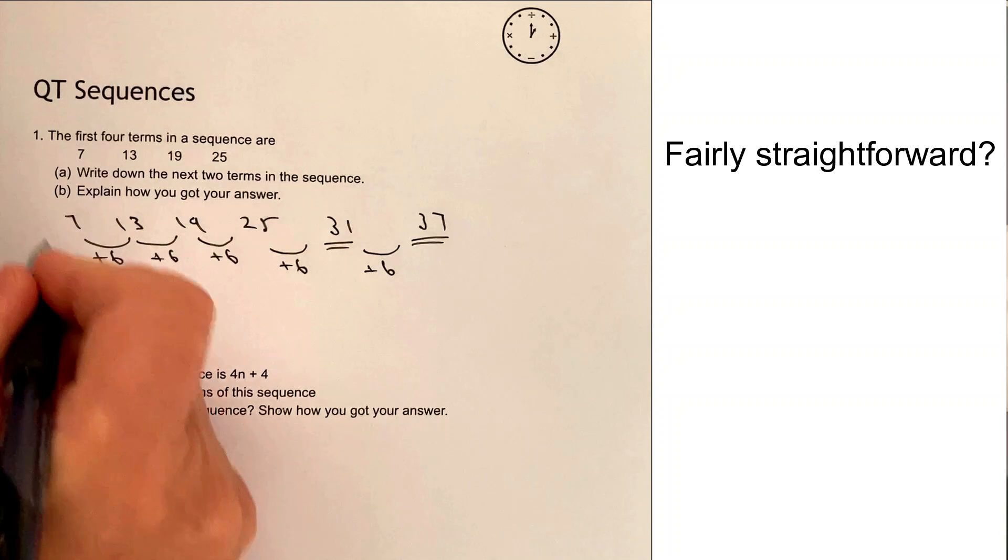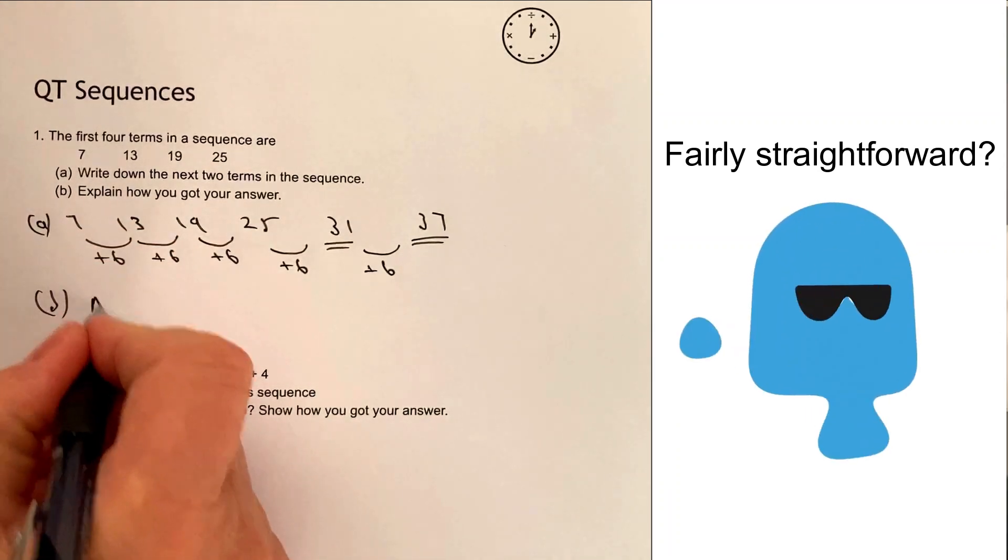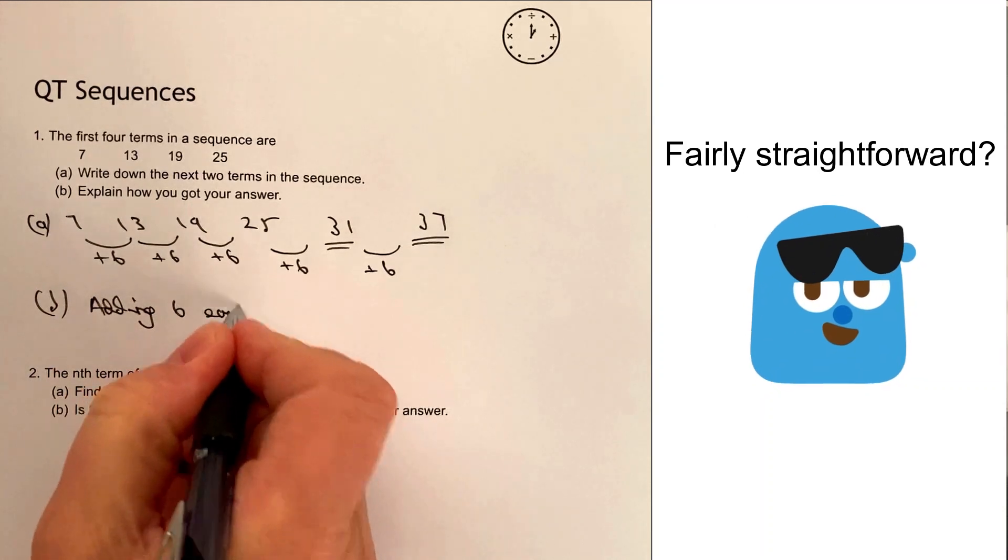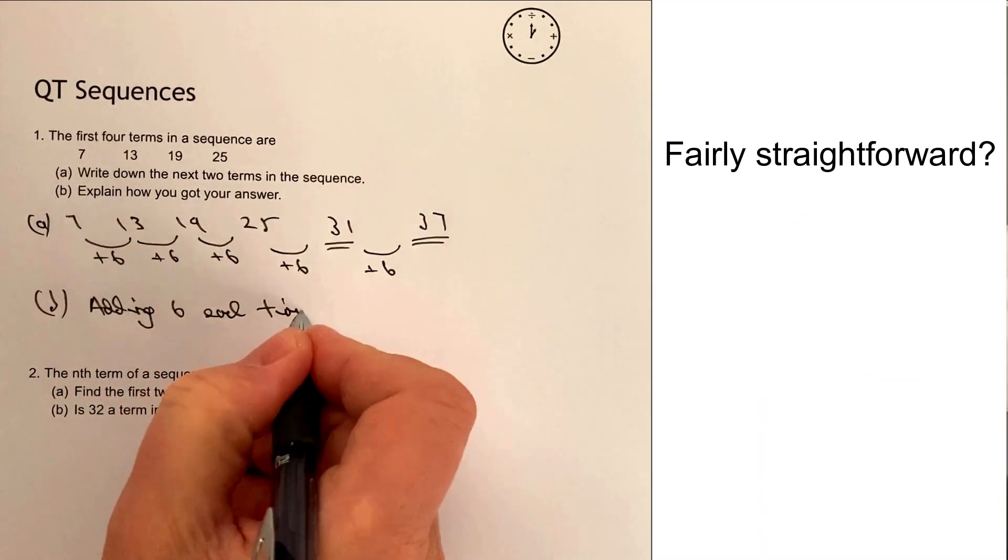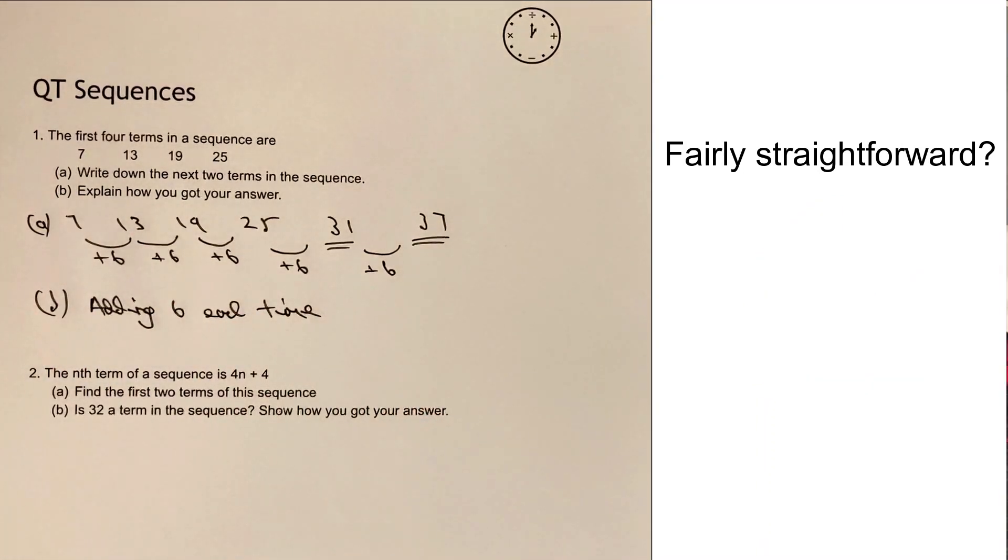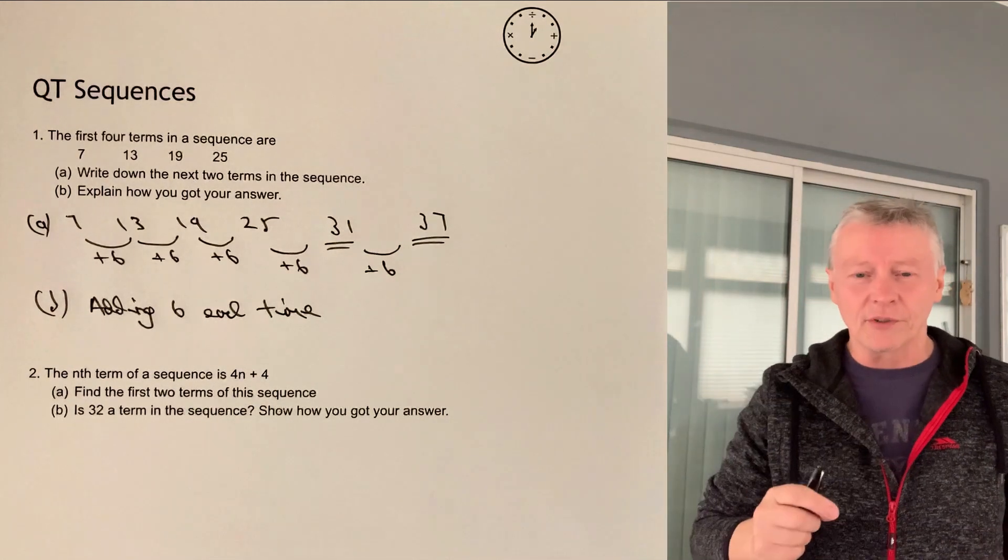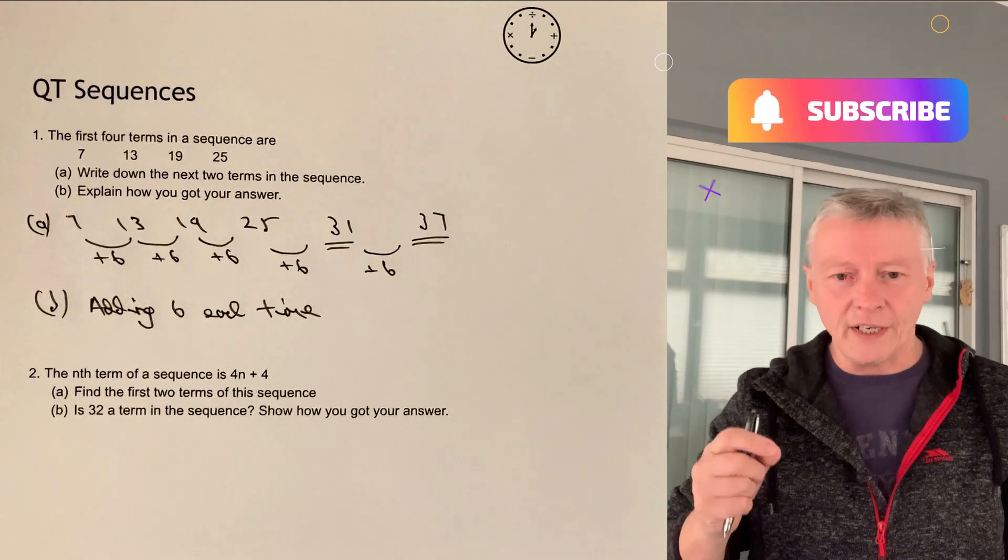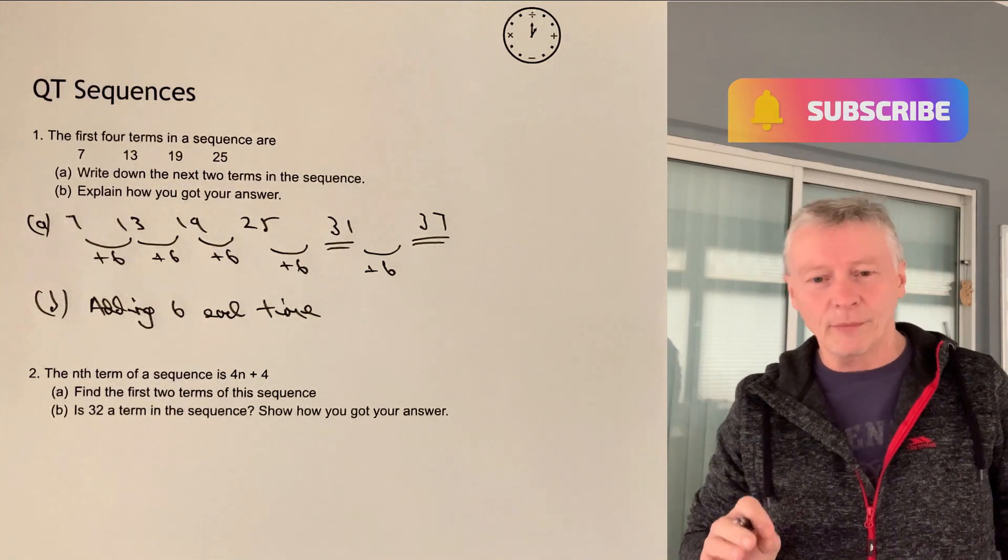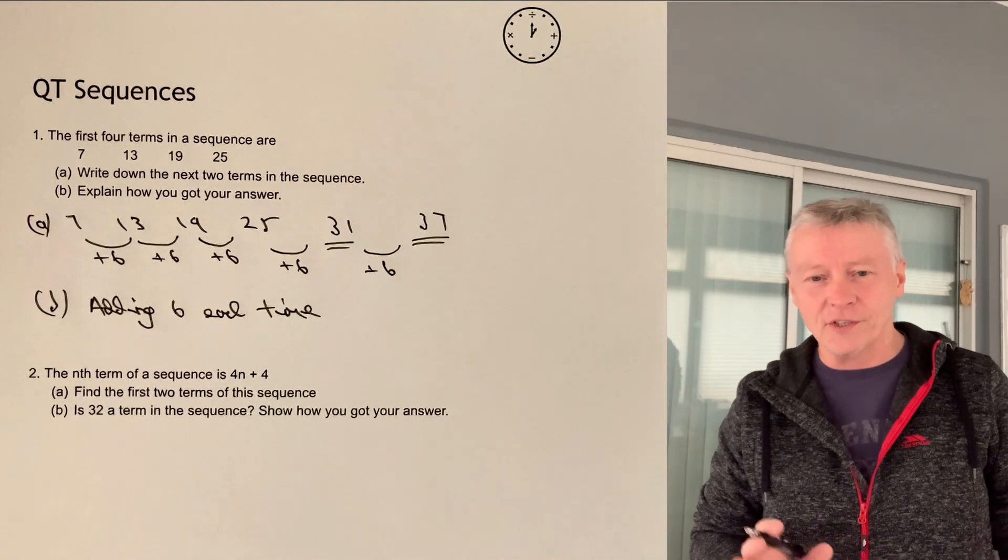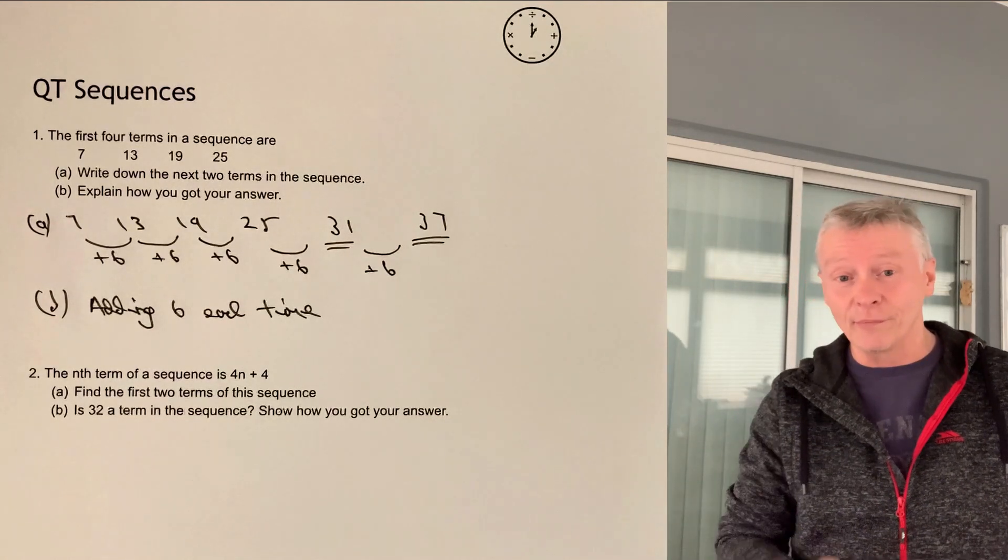Part B, explain how you know, will be that we are adding 6 each time. So fairly straightforward for the first question. Sequences could be as simple as something like a times table, but we also talk in the GCSE curriculum about something called the nth term. We're going to be getting to those questions in a couple of minutes. Let's have a look at question number 2.